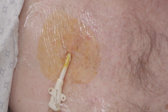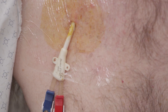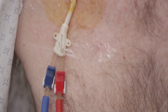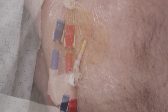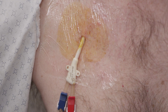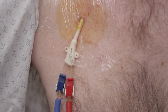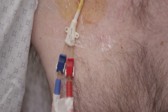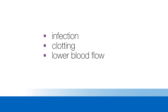A catheter is a tube normally inserted through the skin near the collarbone and placed into the large vein going to the heart. A catheter is sometimes needed when dialysis first starts, while a fistula is maturing, or if there are no other access options. Catheters are normally used as a temporary access. Catheter complications often occur, such as infection, clotting, and lower blood flows leading to poor dialysis treatments.